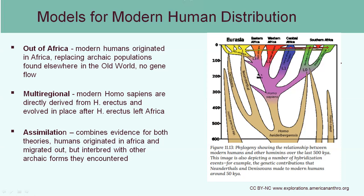The theory that actually has the most evidence is the assimilation theory, which combines the best of both original ideas. There's evidence that humans did originate in Africa and migrated out, but they continued to interbreed with other archaic forms they encountered — including other Homo examples still living in Africa as well as those living in Asia and Europe. Modern Homo sapiens interbred with Neanderthals in Europe and other subspecies in Africa and Asia. There's plenty of gene flow, and there is DNA evidence to support this.